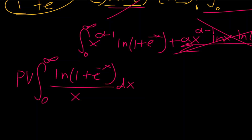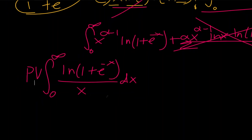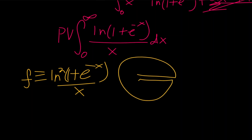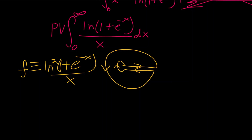What better way to evaluate this than using complex analysis? We define f as the natural log squared of 1 plus e to the minus x over x, and we integrate around a pacman-style contour. When we integrate f around this entire contour, the result is 2πi times the sum of the residues by the residue theorem. Our only pole is at 0, enclosed completely by the circular arc, so we just have 2πi times the residue at 0.